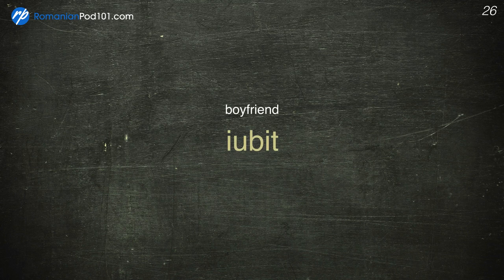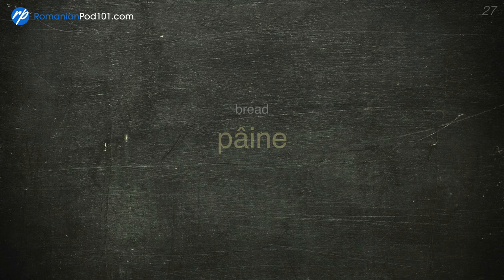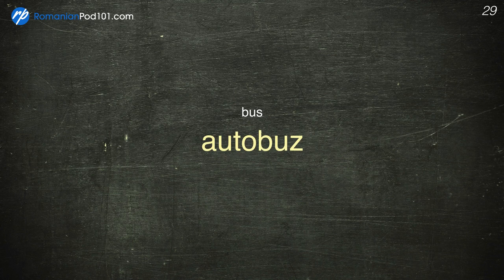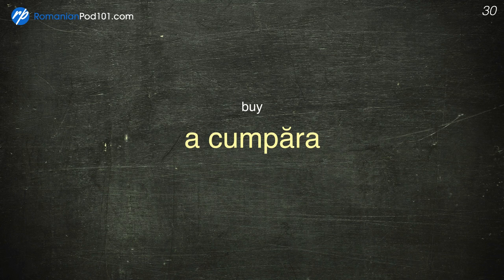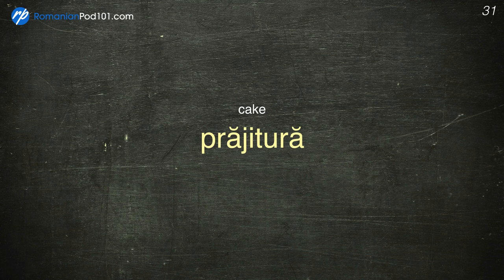Boyfriend — Iubit. Bread — Pâine. Brown — Maro. Bus — Autobuz. Buy — A cumpăra. Cake — Prăjitură.